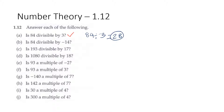Part b: is 84 divisible by negative 14? We do division again. 84 divided by negative 14 is equal to negative 6, and negative 6 is also an integer. So yes, it's divisible by negative 14.